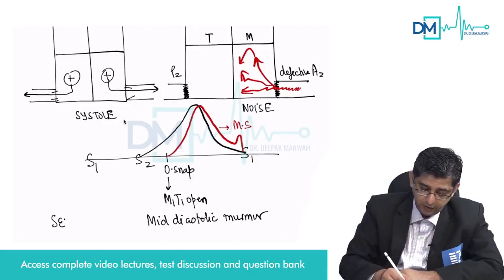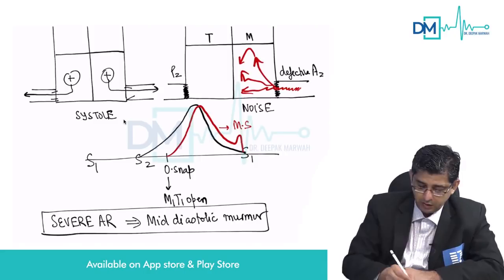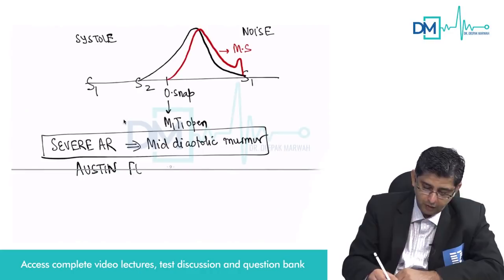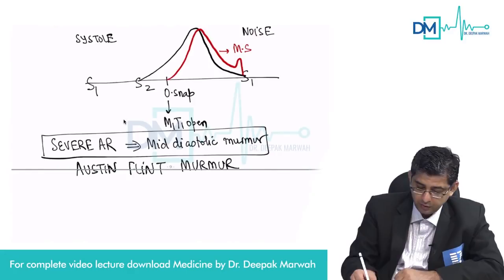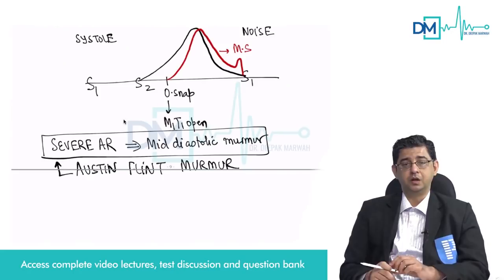In a patient with severe aortic regurgitation, the substantial volume of blood leaking back can cause a mid-diastolic murmur. This is technically known as the Austin Flint murmur — a classical term for the mid-diastolic murmur of severe aortic regurgitation. The starting point of this murmur is S2, the second heart sound, not the opening snap, which belongs to mitral stenosis.